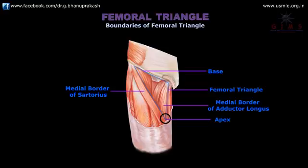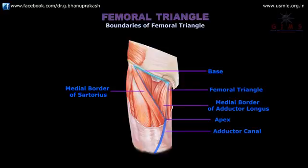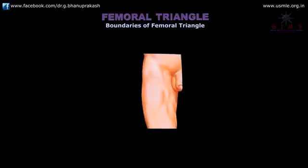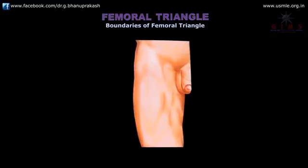This apex is continuous below with a canal called the adductor canal. After knowing the boundaries — that is medial, lateral, the base as well as apex — let us see the roof and floor of the femoral triangle.